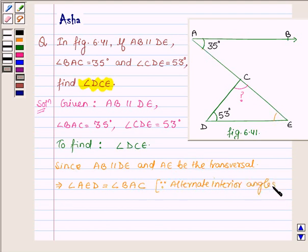If two lines are intersected by a transversal and the two lines are parallel, then the alternate interior angles are equal.